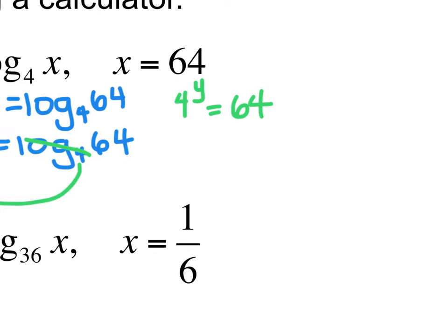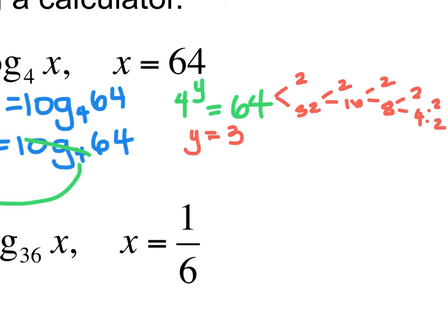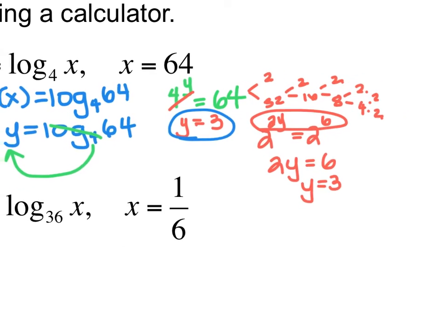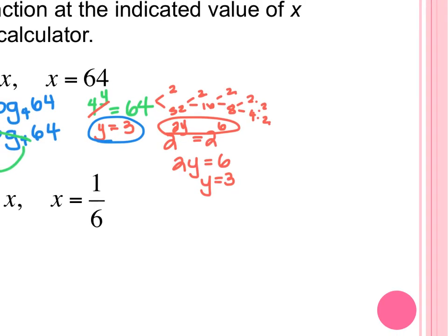Now you can either use mental math — what power would I raise 4 to to get to 64? That is 3. So Y is 3. Or I can break 64 down using a factor tree: 64 is 2 times 2 times 2 times 2 times 2 times 2 — six 2's. So 2 to the 6th equals 64, and 4 would be 2 squared. So 2 squared raised to the Y equals 2 to the 6th, giving me 2Y equals 6, so Y equals 3. Because this was a function to begin with, I would say F of X equals 3.